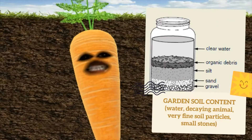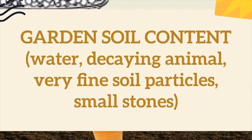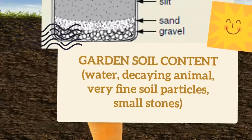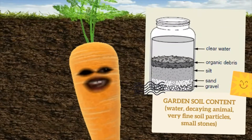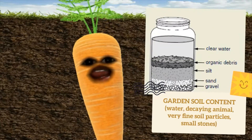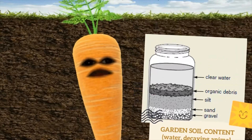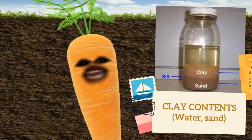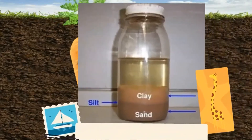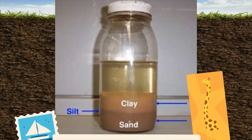Decaying animals means twigs and also dry leaves — that is the meaning of decaying matter. Next, let's look at clay contents. Clay contents have only clay, water, and sand. That's all — there are only a few particles in the clay content.